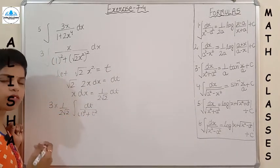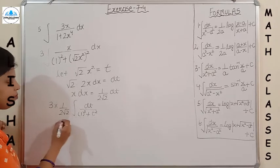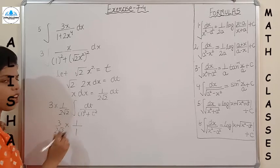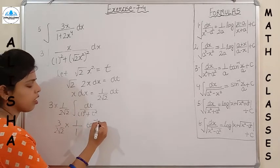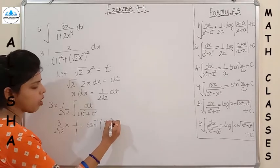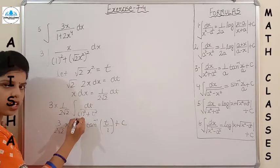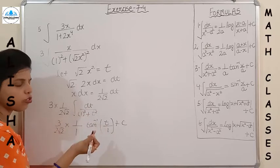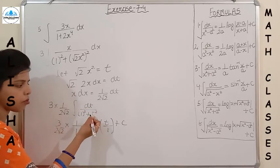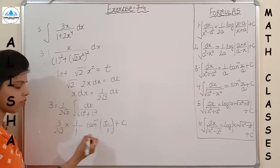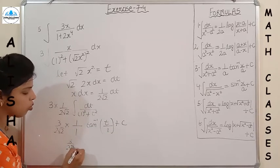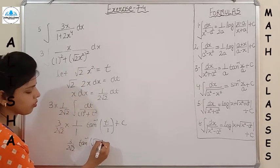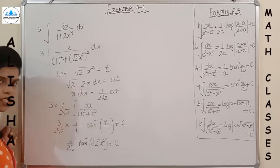Here a = 1, so the formula gives (1/a) tan⁻¹(t/a) = tan⁻¹(t). Combining constants, the answer is (3/(2√2)) tan⁻¹(√2 x²) + C. Please note down.